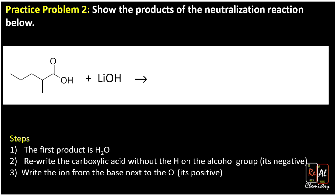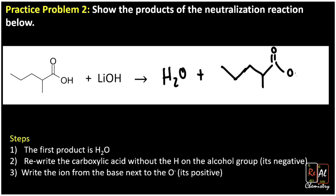Another practice problem: show the products of the neutralization reaction. Once again, we remember our first product is water. Then we redraw our carboxylic acid and drop off the H on the OH group — it's gone, leaving behind a negative charge. The metal from the base — remember we got rid of the OH — is Li, lithium. So we write Li⁺ here. That's neutralization reactions of carboxylic acids.